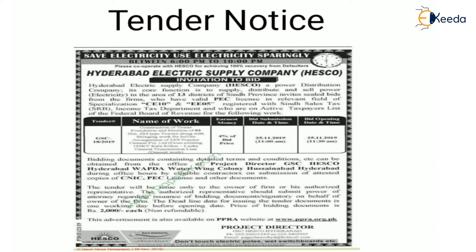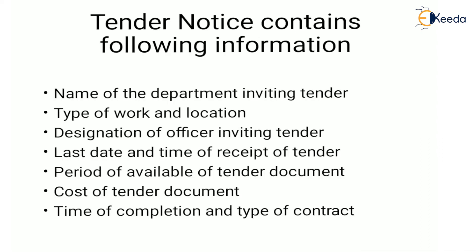Here is a paper article of a tender notice. As you can see, the company name is Hyderabad Electrical Supply Company — this is an invitation to bid. The information given in this tender notice includes: name of the work, earnest money, bid submission date and time, and bid opening date and time. A tender notice will contain the following information: name of department inviting tender, type of work and location, and designation of officer inviting the tender.